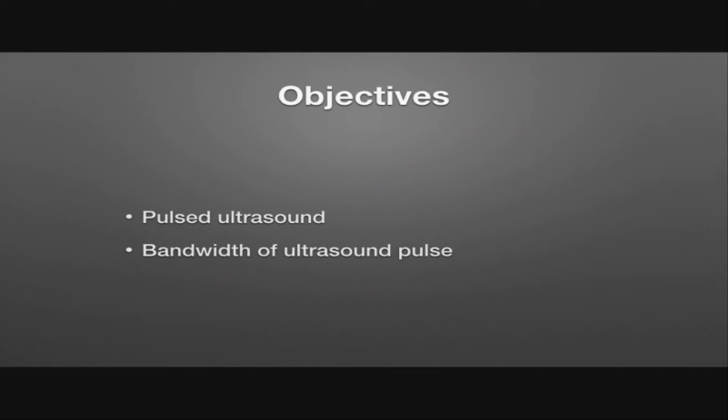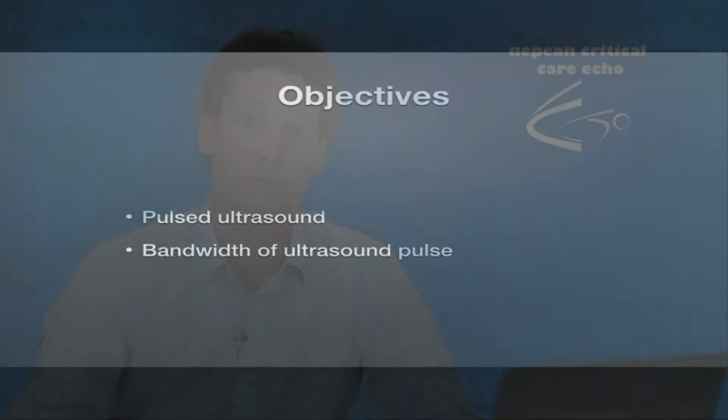Ultrasound images are actually made up from short pulses of transmitted ultrasound. The ultrasound machine will send out a short pulse and then listen for the returning echo. As well as talking about these pulses, we'll talk about the bandwidth, or the range of frequencies that are contained within the ultrasound pulses.